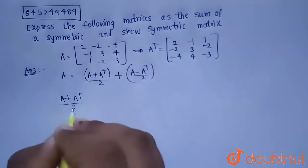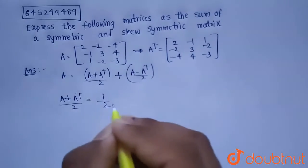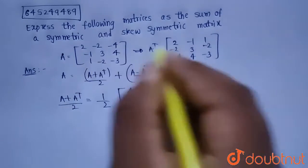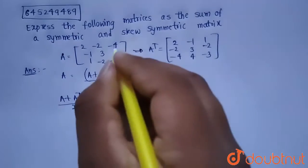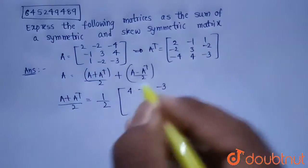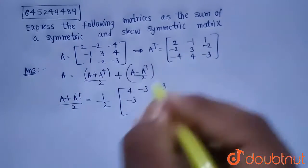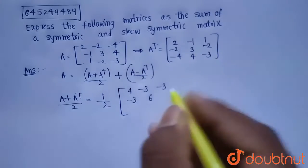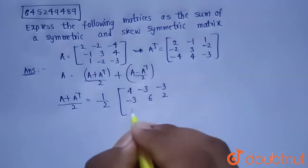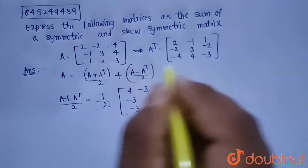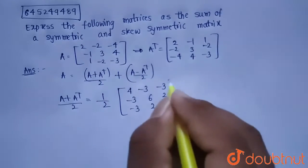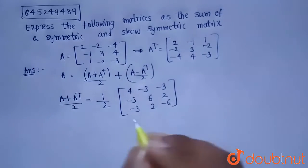Now we have A and A transpose. The symmetric part is (A + Aᵀ) / 2, which equals 1/2 times the matrix: [4, −3, −3; −3, 6, 2; −3, 2, −6]. This is the symmetric part.